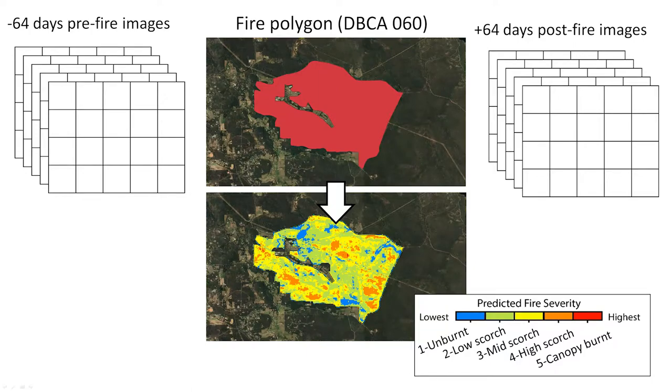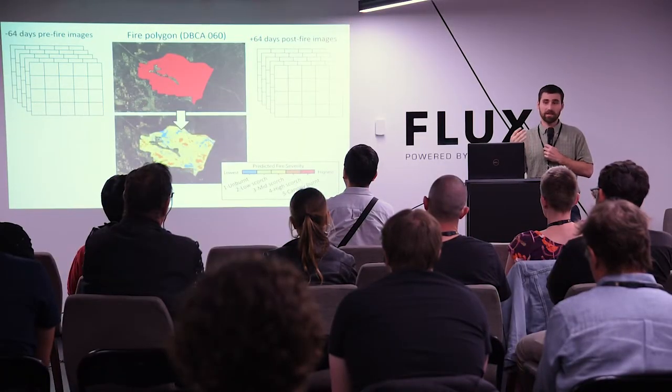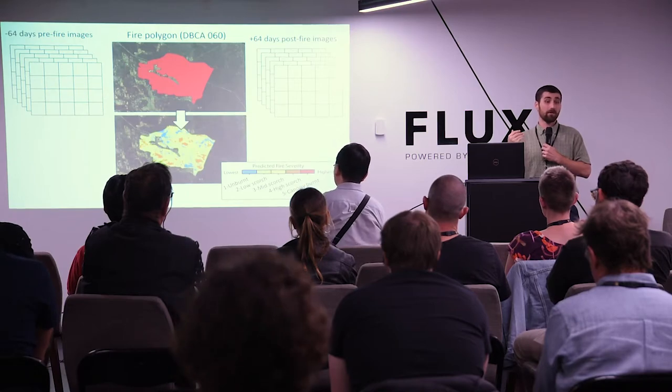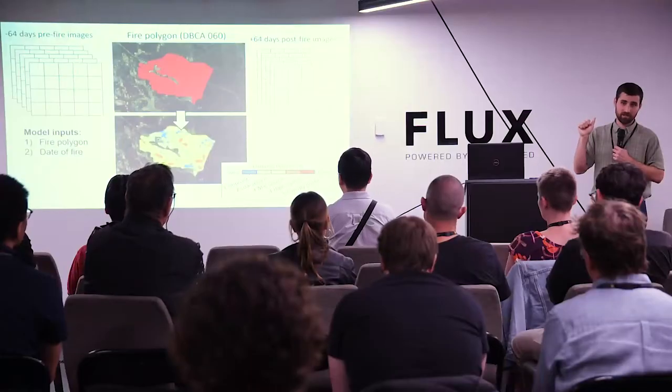For each DBCA fire polygon, we really only need two bits of information using Earth Engine: the geometry — the shape — and the date of the fire. We can then delineate the pre and post-fire image composites, which are composites of all Landsat images intersecting that fire polygon before or after the fire date. We take the median composite value of all pixel values for each pixel, using all images within 64 days before and after the fire. We do that to avoid impacts of noise from clouds, cloud cover, and haze that may have been missed in the cloud mask. Then we predict the severity score with five categories.